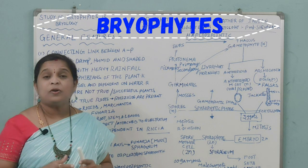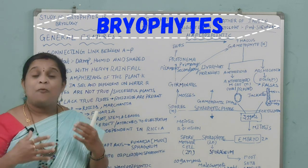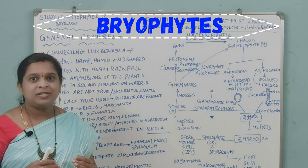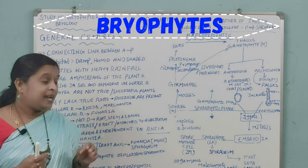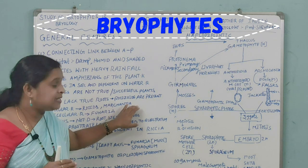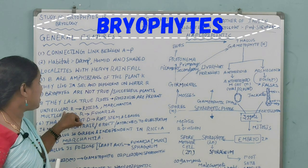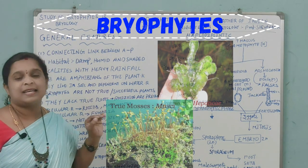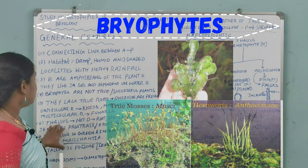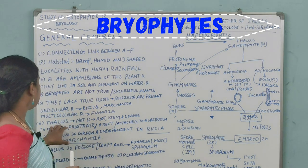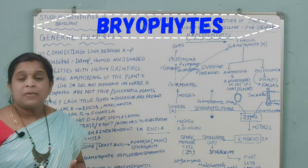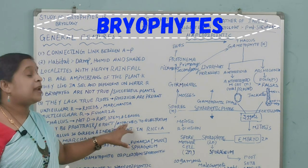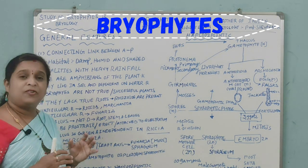Bryophytes are not considered true or successful plants because they do not have true roots. Root-like structures called rhizoids are present, but they are not true roots. These rhizoids may be unicellular or multicellular. Unicellular rhizoids are present in Riccia and Marchantia, while multicellular rhizoids are present in Funaria. The thallus is not differentiated into root, stem, or leaves, but in some species it may be prostrate, erect, or attached to the substratum.